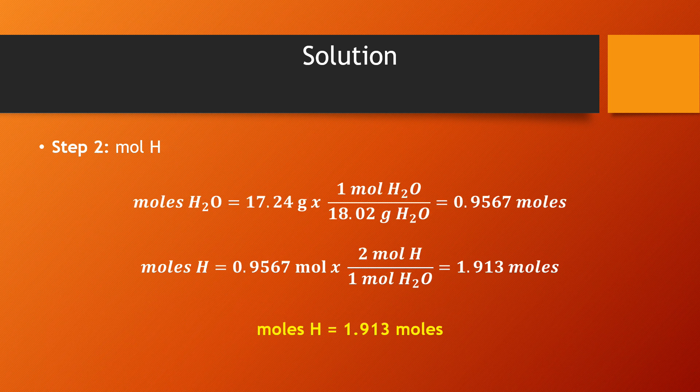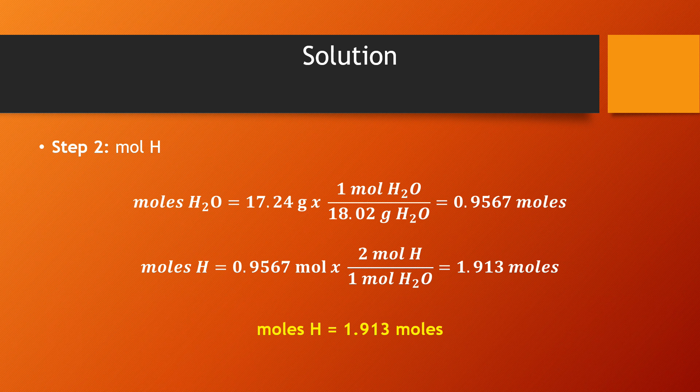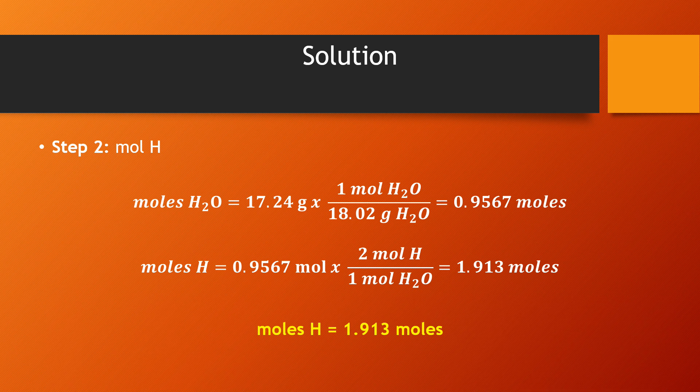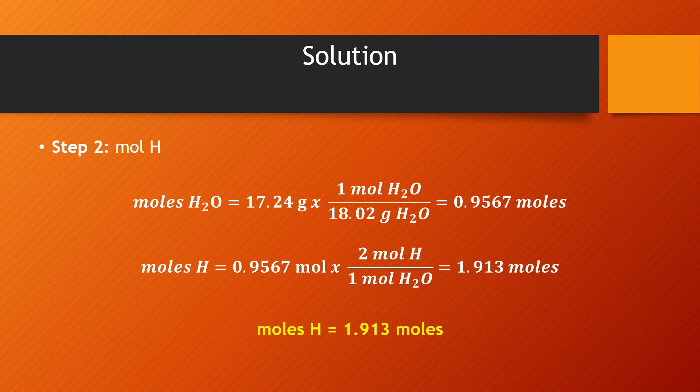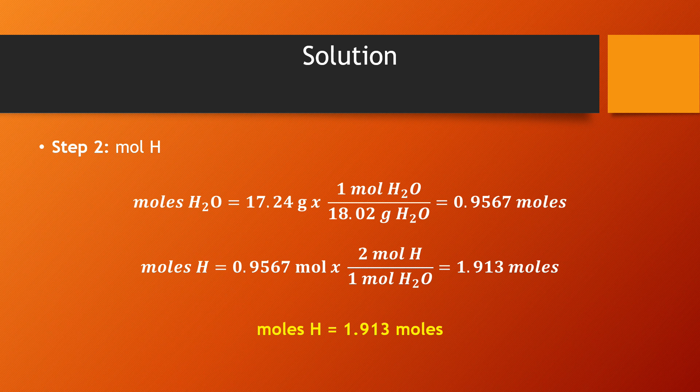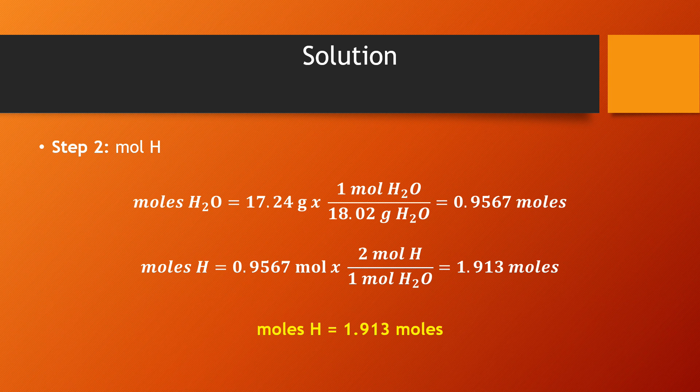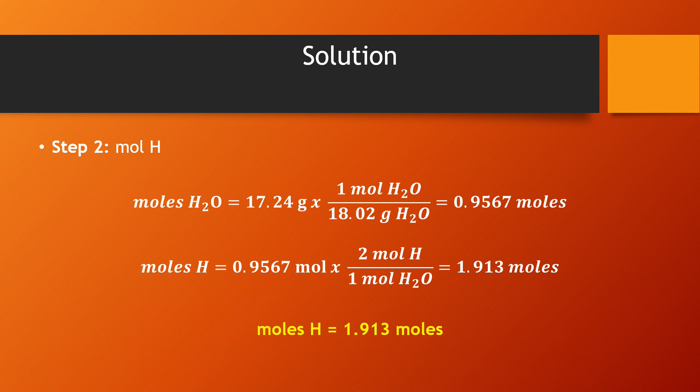Now, for step two, we will have a similar approach as step one to find the moles of hydrogen. Take the 17.24 grams and divide it by the molar mass of H2O to get 0.9567 moles. Since there are two hydrogen atoms in H2O, the number of moles would be multiplied by 2 to get a final number of 1.913 moles of hydrogen.